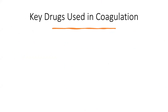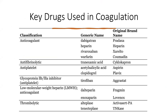Key drugs in coagulation: anticoagulants — dabigatran (Pradaxa), heparin, rivaroxaban (Xarelto), warfarin (Coumadin). Anti-fibrinolytic — tranexamic acid. Antiplatelet — acetylsalicylic acid (aspirin), clopidogrel (Plavix), glycoprotein 2B/3A inhibitor tirofiban. Low molecular weight heparin anticoagulants — dalteparin and enoxaparin. Thrombolytics — alteplase and tenecteplase.